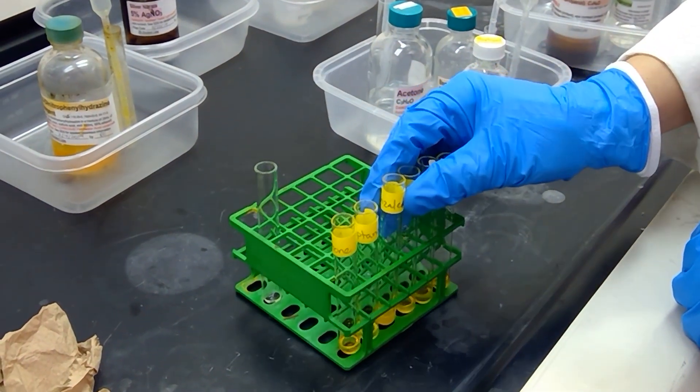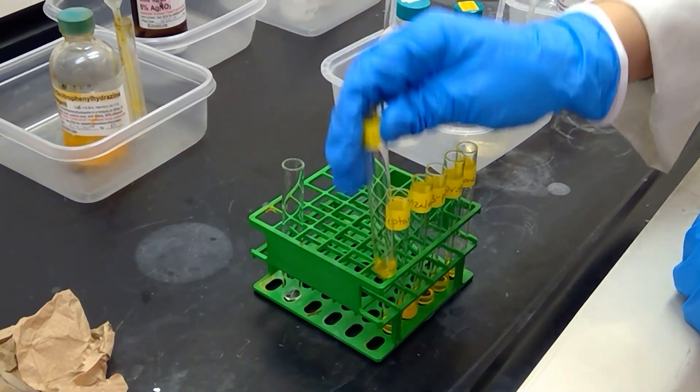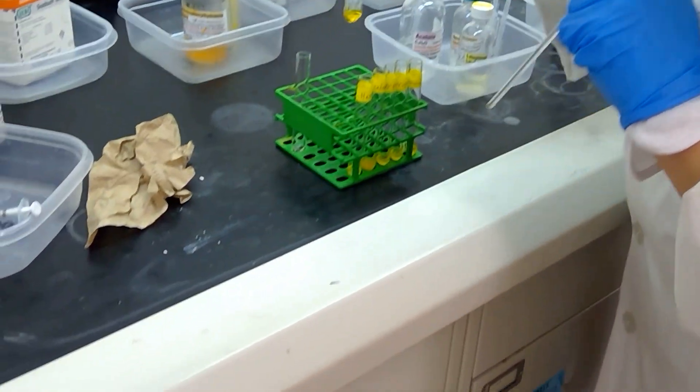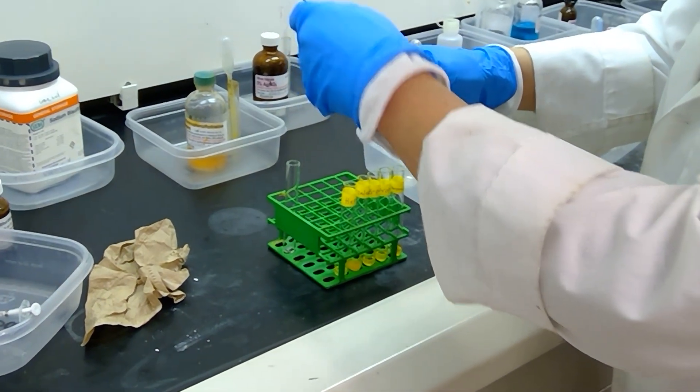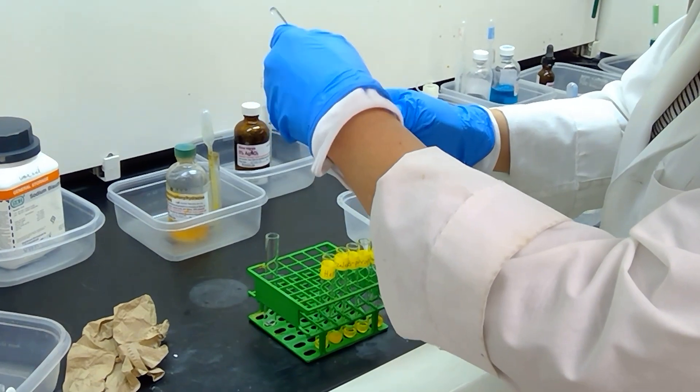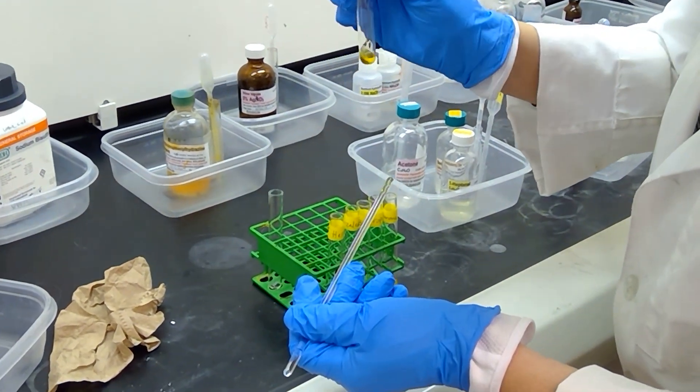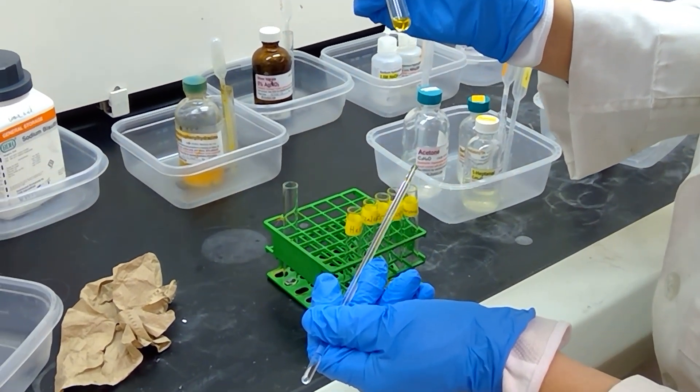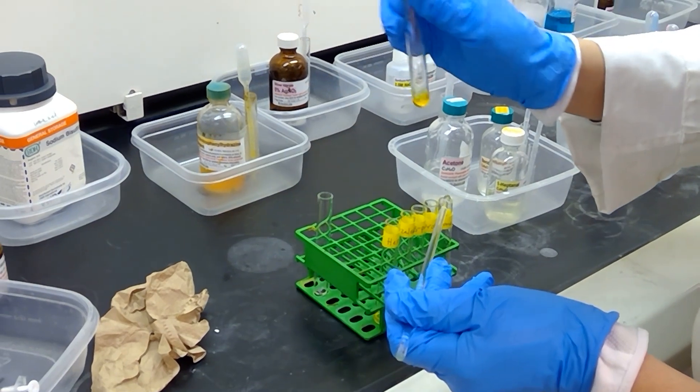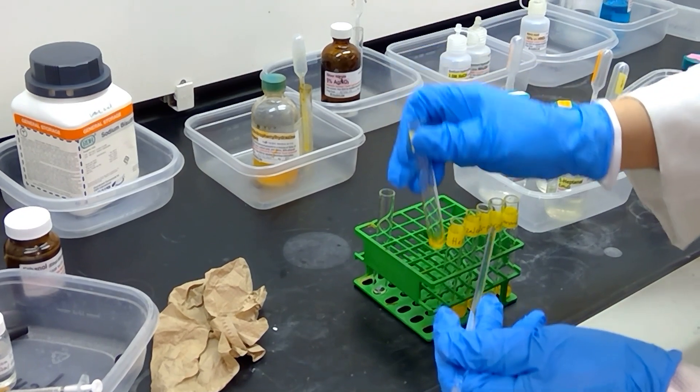Next up, what I'm going to do is scratch each sample slightly with my glass rod here. I'm starting with the acetone sample to see if I can increase that precipitation. Well, the precipitation isn't really increasing, but the slight orange flecks are pretty visible.